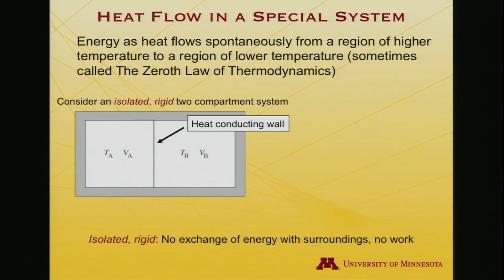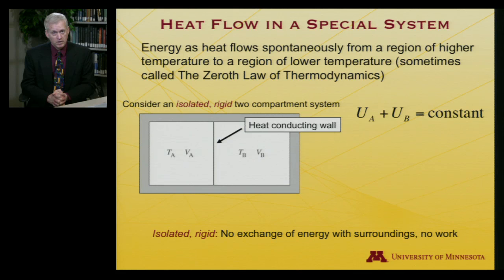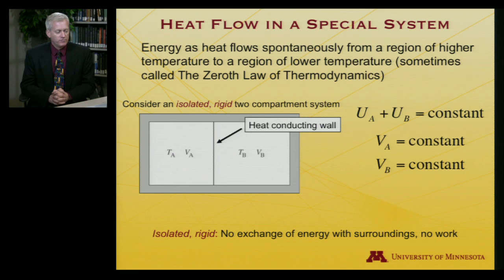The fact that it's isolated means no exchange of energy with the surroundings — whether heat, work, or anything else. The rigid aspect means no work can be done, because dV equals zero for both compartments. So the first law tells us that the sum of the internal energies, uA plus uB, must be a constant. VA and VB are also constant by definition of being rigid.